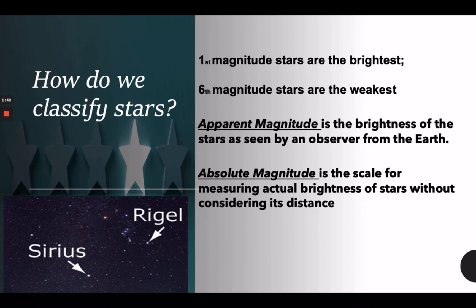Let's take a look at Sirius and Rigel to illustrate the effect of distance on apparent brightness. Compared to the Sun, Sirius is about 27 times as powerful, but Rigel has the power of many thousands of suns. In terms of distance from Earth, Rigel is almost 100 times farther away than Sirius. In terms of apparent brightness, Sirius is about twice as bright as Rigel, because it is closer to Earth.